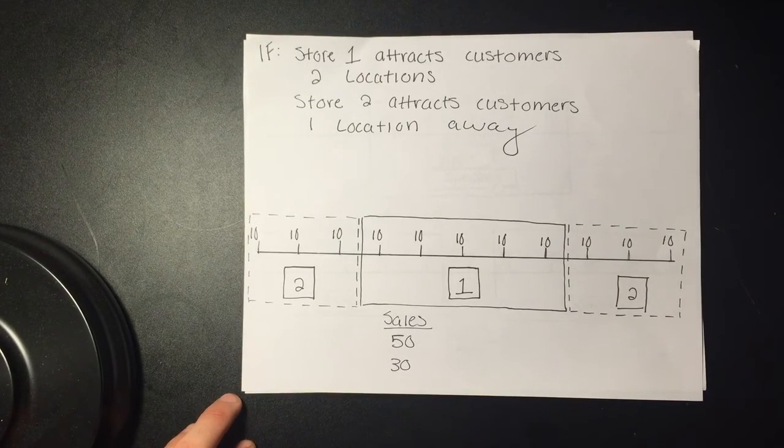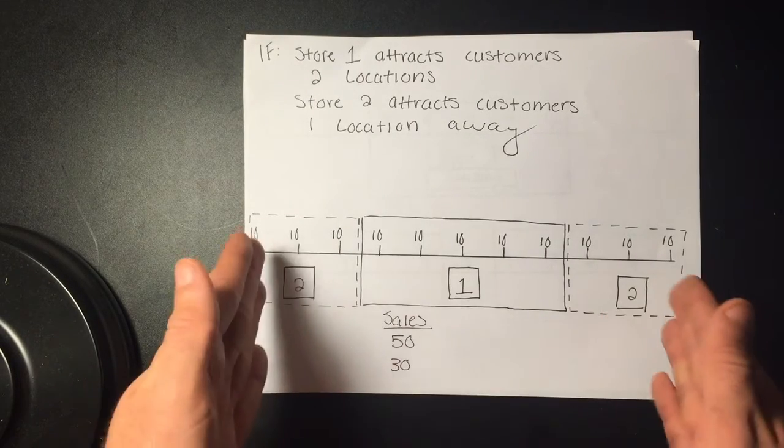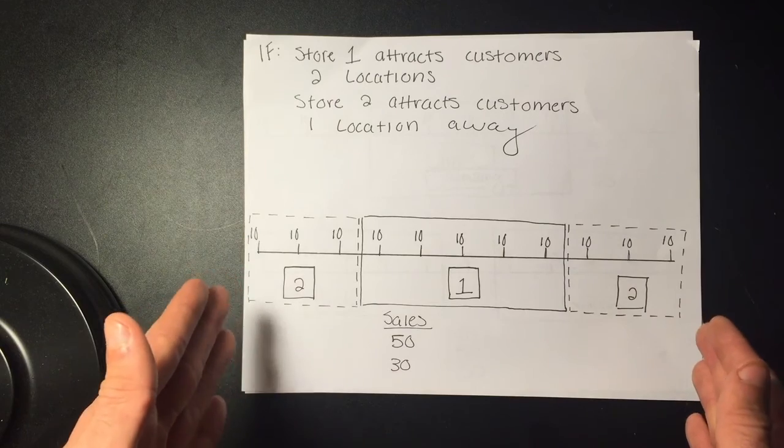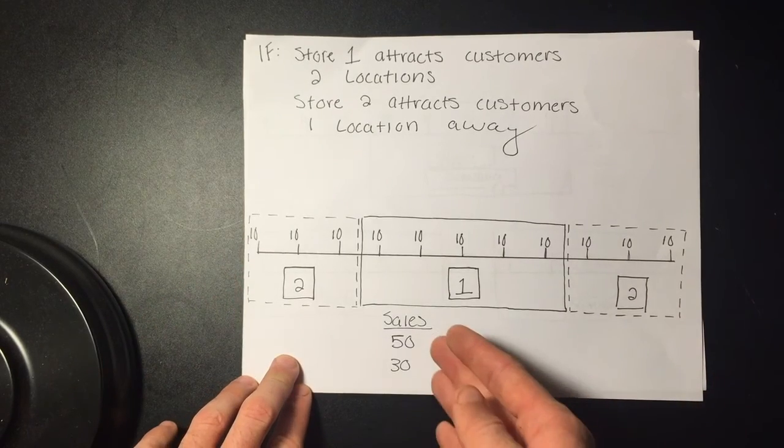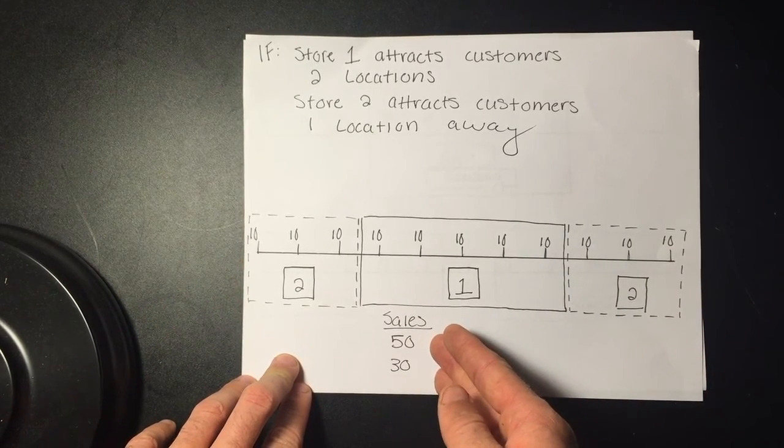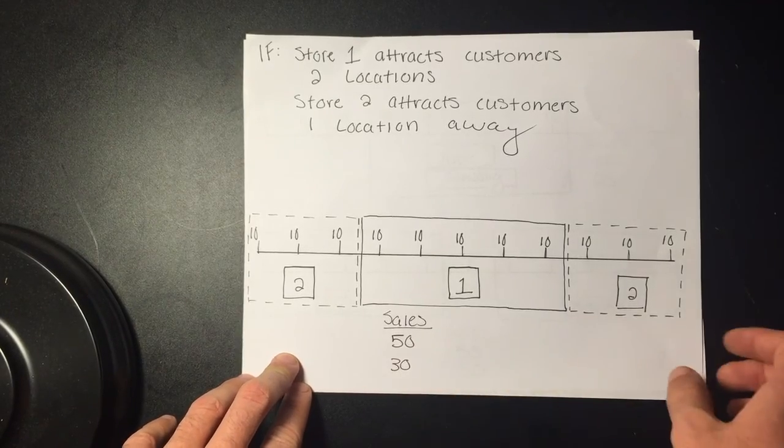Therefore, for store 2 to maximize their profits, they should move to the fringes outside of store 1's control. This results in a sale of 50 for store 1 and sales of 30 for store 2.